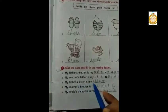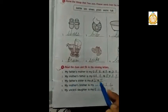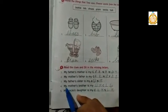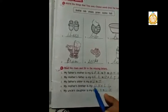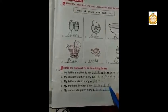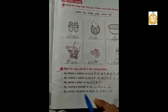Next question: My mother's brother is my uncle. Spelling of uncle is U-N-C-L-E. Next question: My uncle's daughter is my cousin. Spelling of cousin is C-O-U-S-I-N.